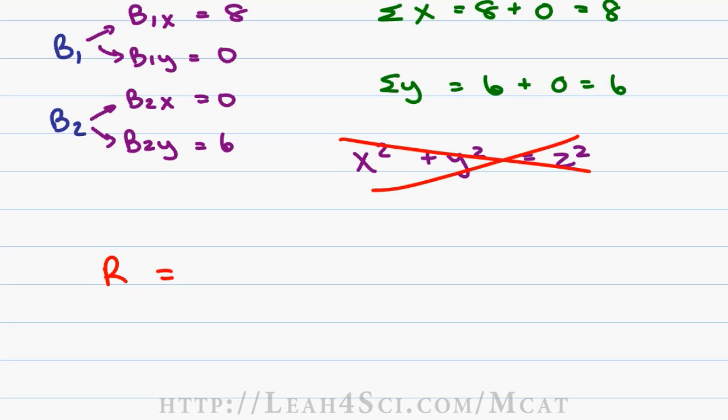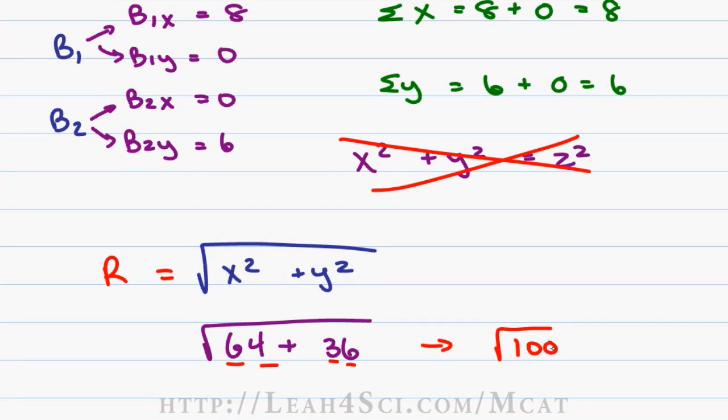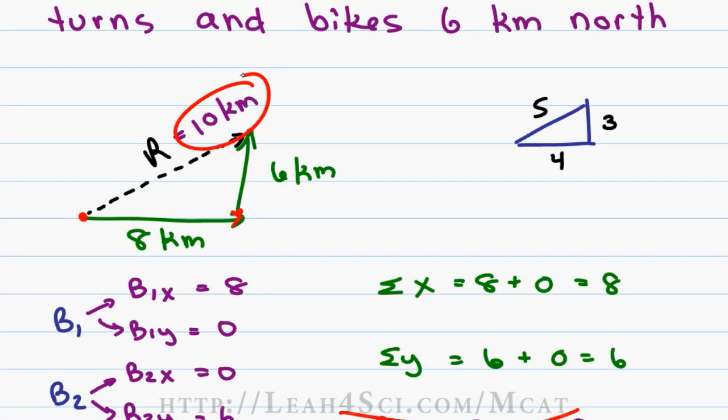You should know this formula and be confident enough that you don't have to write it out this way. Instead you should simply write resultant equals the square root of x squared plus y squared. In this case x squared is 8 squared or 64, y squared is 6 squared or 36. If we add 64 and 36, we get 100. That means the resultant is the square root of 100 which equals 10 and that's the number we initially predicted.